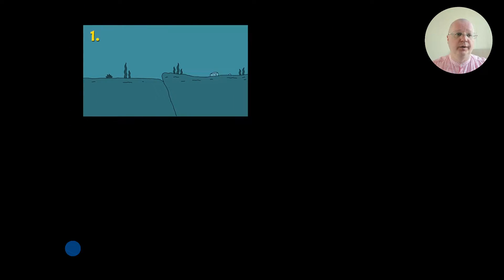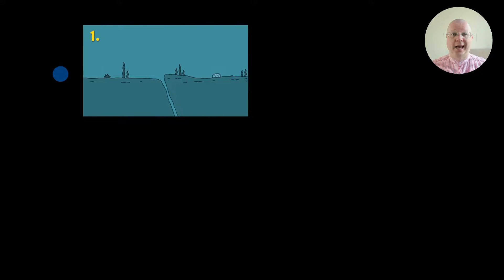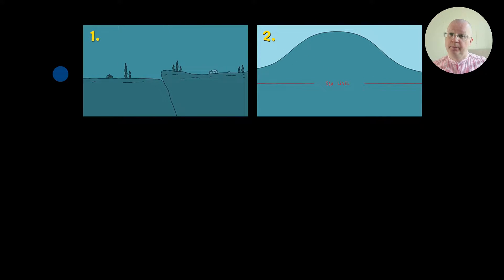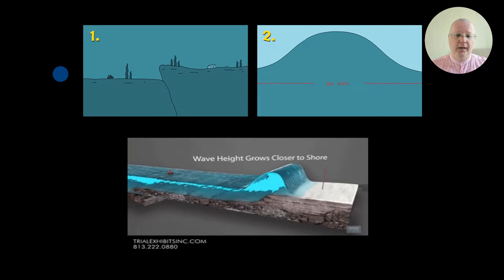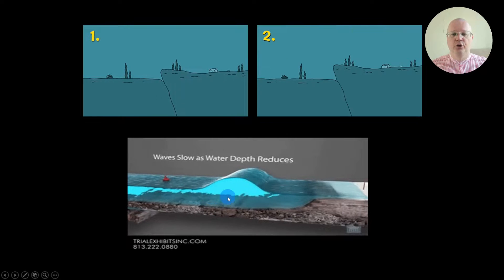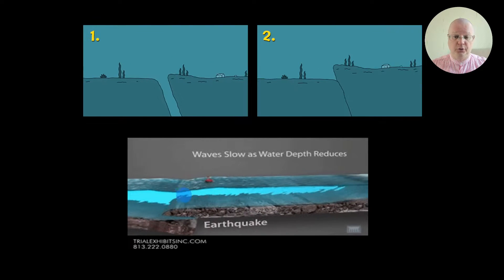Most tsunamis happen because of a big underwater earthquake. On the next slide you can explain how it happens: first, land moves — an earthquake is the shaking of the earth's surface, so it happens when land moves. When land moves, it pushes water up which creates a big wave, and this wave travels to the shore and becomes bigger as it gets closer.